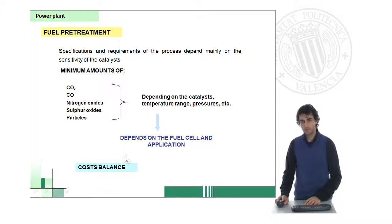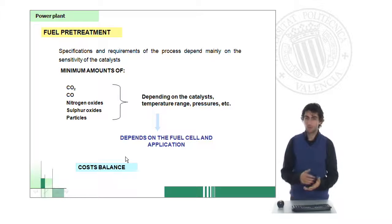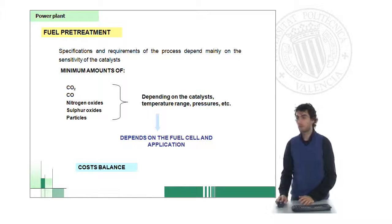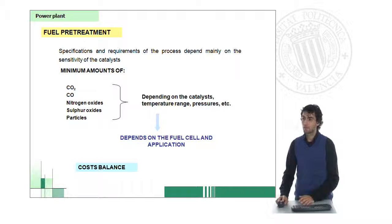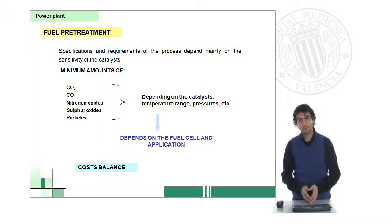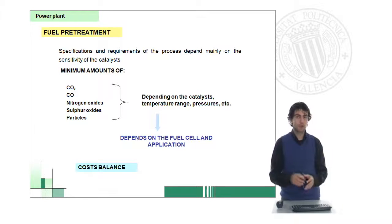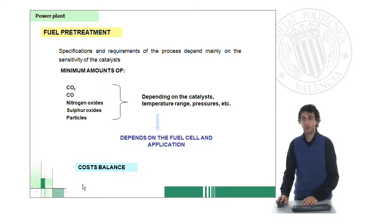We will have to consider the cost balance that we have in the overall plant. But in general terms, if we use high temperature fuel cells, we will be able to have higher levels of impurities. And if we have low temperature fuel cells, we will be forced to have very pure hydrogen streams.